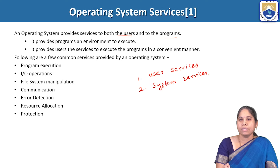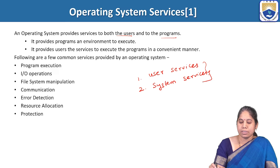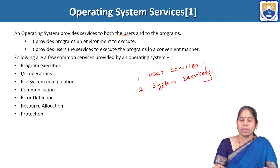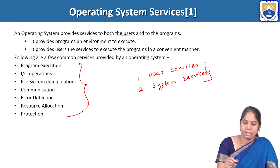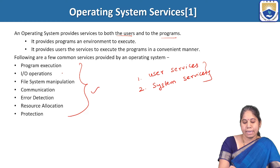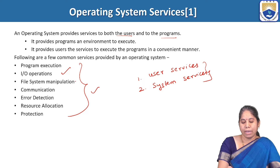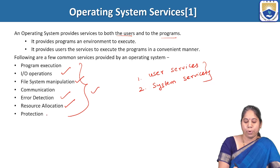The operating system provides programs an environment for execution and also provides services to users to execute programs in a convenient manner. Under this category, the different services provided by the operating system are: program execution, I/O operation, file system manipulation, communication, error detection, resource allocation, and protection.